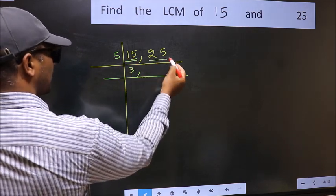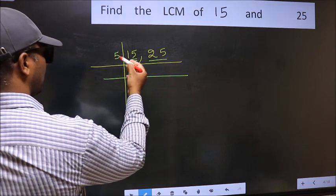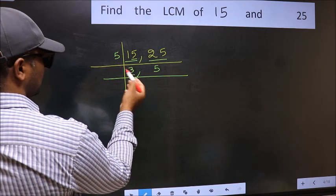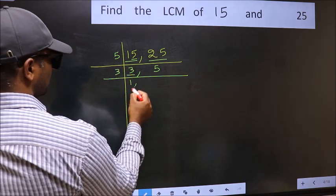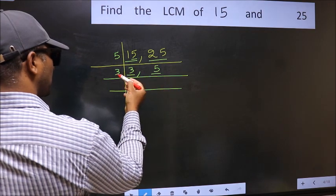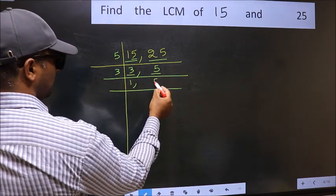The other number 25. When do we get 25 in 5 table? 5 times 5 is 25. Now here we have 3. 3 is a prime number, so 3 once is 3. The other number 5 not divisible by 3, so you write it down as it is.